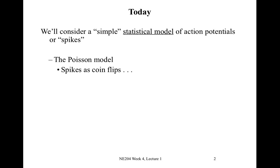So what will we consider this week? We're going to build a simple statistical model of action potentials, or spikes. And the model we're going to build is called a Poisson model, and we'll see that we can think of spikes in this model as coin flips. So that's the idea of this Poisson model, think of individual spikes as coin flips. And we'll dig into what that means this week.